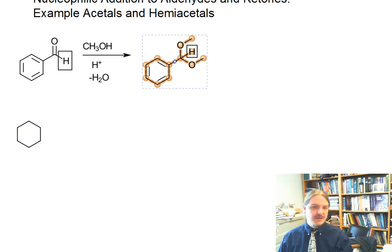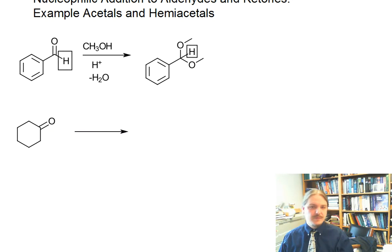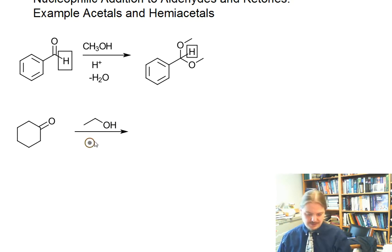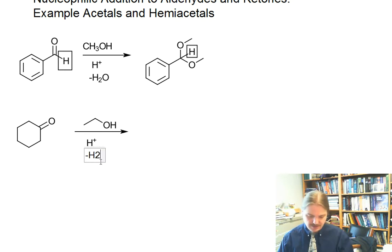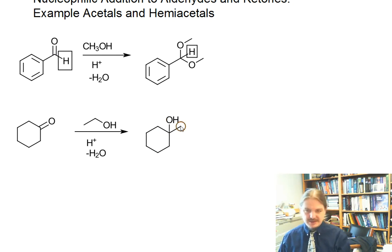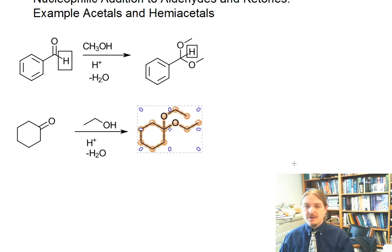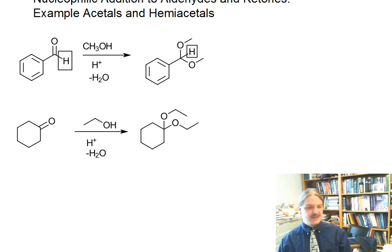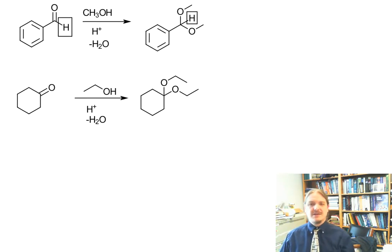Just about any aldehyde or ketone can be converted into an acetal. So here is ethanol and cyclohexanone in acid, minus water. I'm going to make the cyclohexanone diethylacetal, and there is its structure. Generally primary alcohols work really well here because we are reacting alcohols in acid — secondary and tertiary alcohols can undergo some other kinds of undesirable reactions.